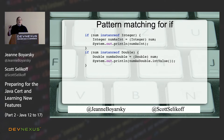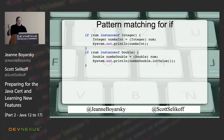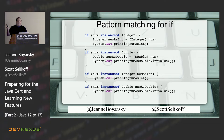Moving on to pattern matching, which is entirely about reducing boilerplate. If you've ever written an instanceof check, you've probably immediately cast on the next line. Pattern matching combines the instanceof check and the explicit cast and variable assignment into one operation. So instead of checking instanceof and then casting separately, you now write the variable declaration right in the instanceof expression. That's called a pattern variable.